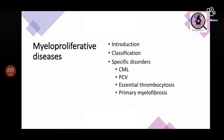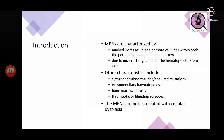We will now discuss four main myeloproliferative disorders: CML (chronic myeloid leukemia), polycythemia vera, essential thrombocytosis, and primary myelofibrosis. The most common and important feature of myeloproliferative neoplasms is a marked increase in one or more myeloid cell lines in both peripheral blood and bone marrow, due to incorrect regulation of hematopoietic stem cells. Other common characteristics include cytogenetic abnormality, extramedullary hematopoiesis (commonly in liver and spleen), bone marrow fibrosis, and thrombotic or bleeding episodes. Importantly, there is no dysplasia.